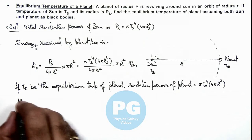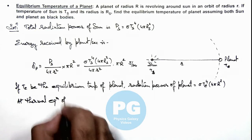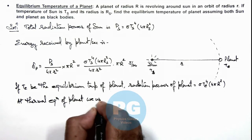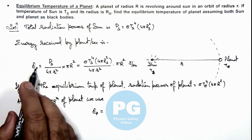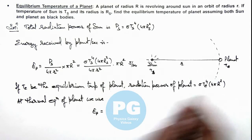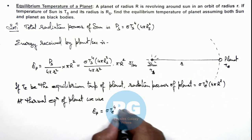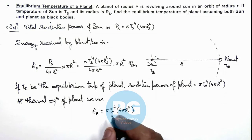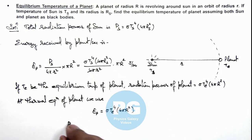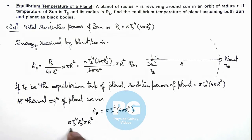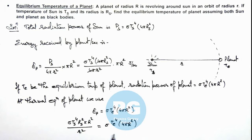At thermal equilibrium of the planet, we use the condition that Ep — the power received by the planet from the sun — should equal the radiation power of the planet, which is sigma Te to the power 4 multiplied by 4 pi r squared. Substituting the values of Ep, the 4 pi terms cancel. We get sigma Ts to the power 4 times Rs squared times pi r squared, divided by R squared, equals sigma Te to the power 4 times 4 pi r squared. The sigma and pi r squared terms then cancel out on both sides.